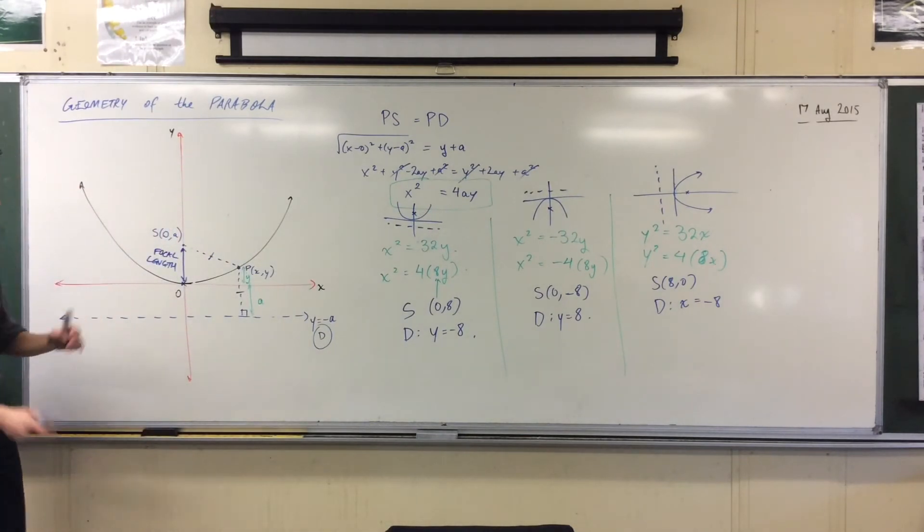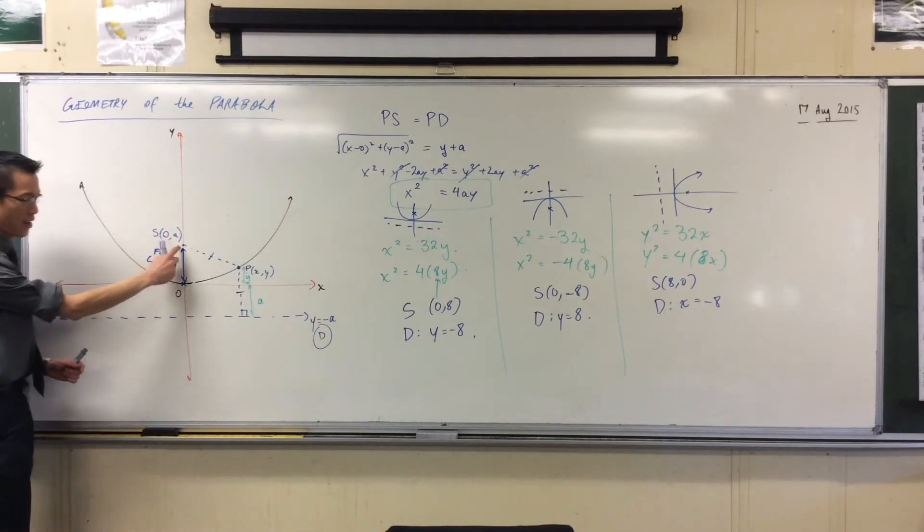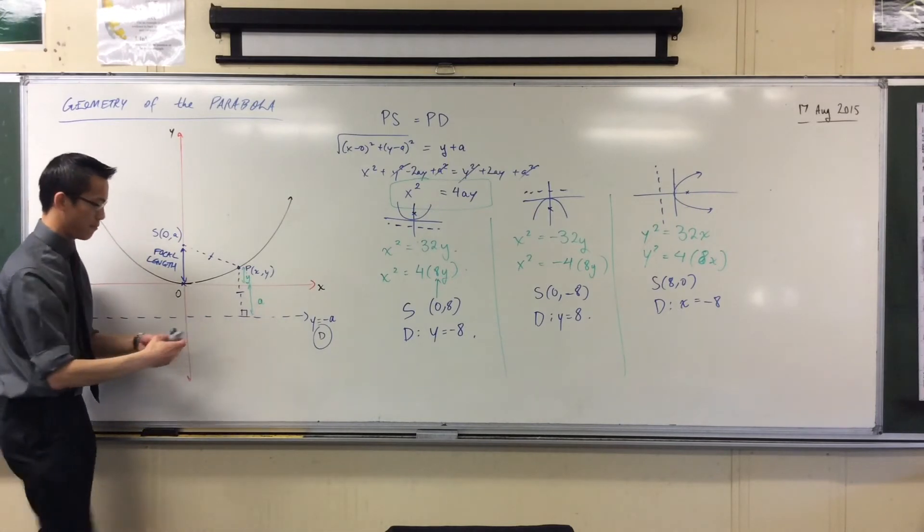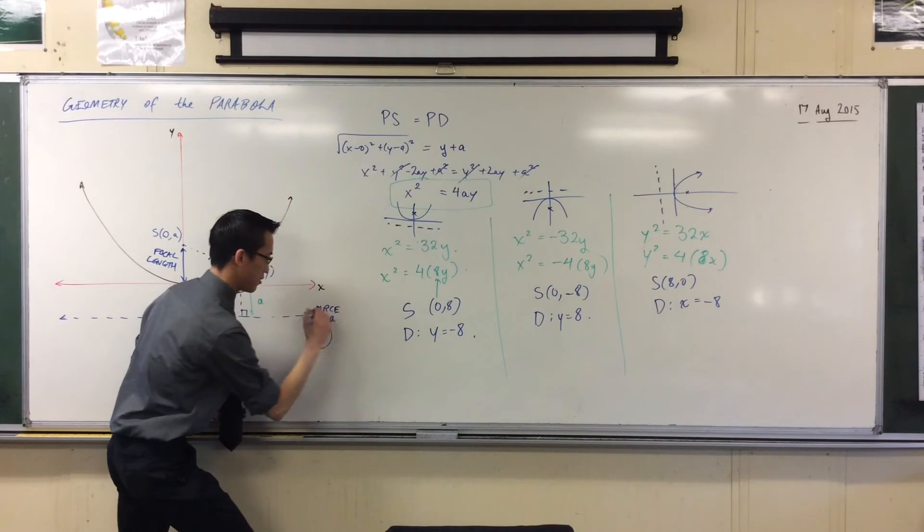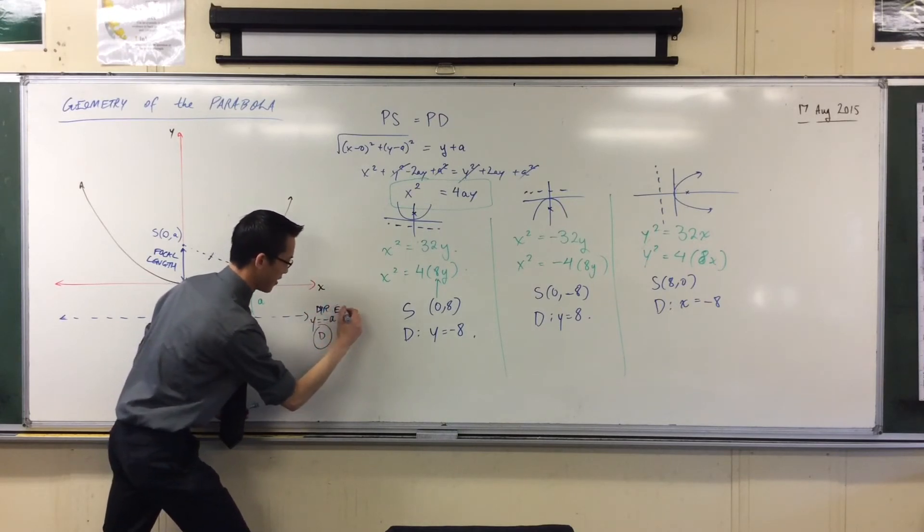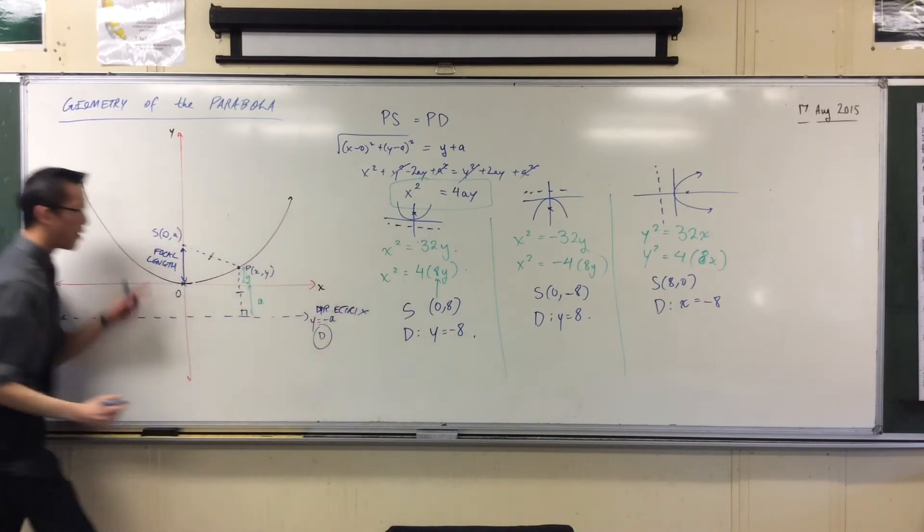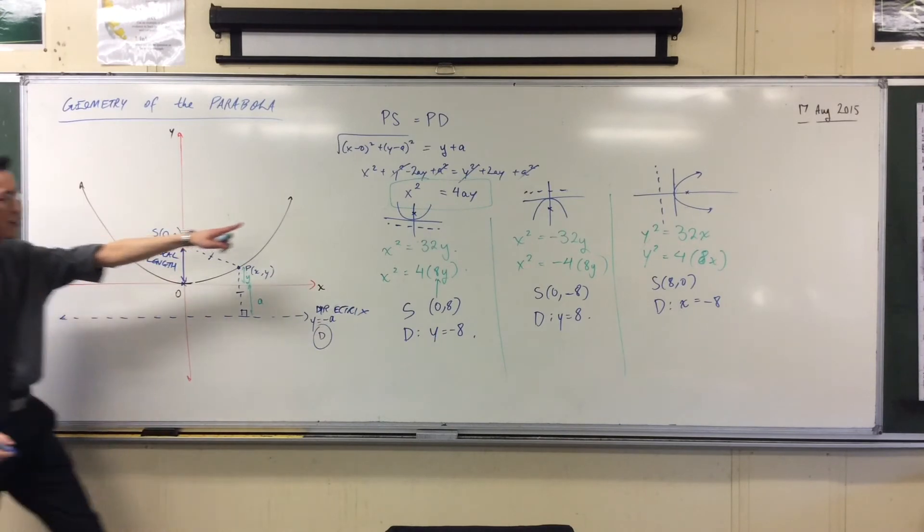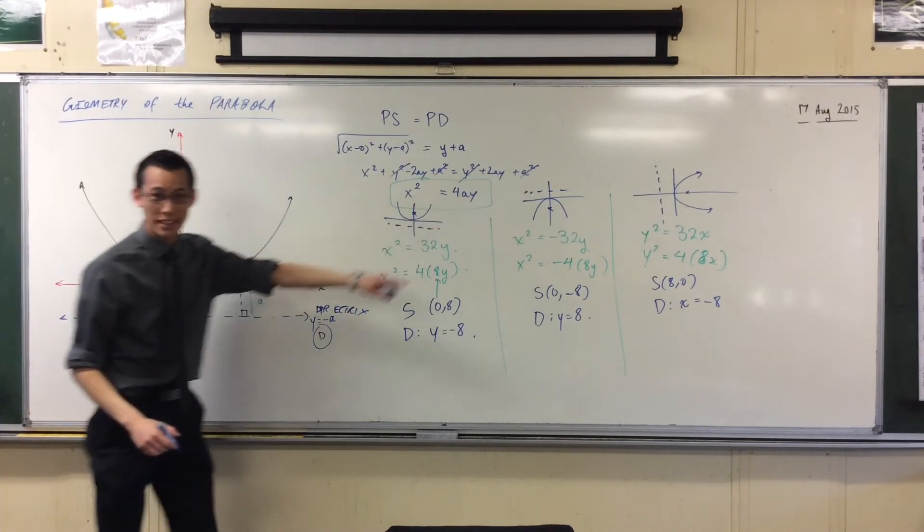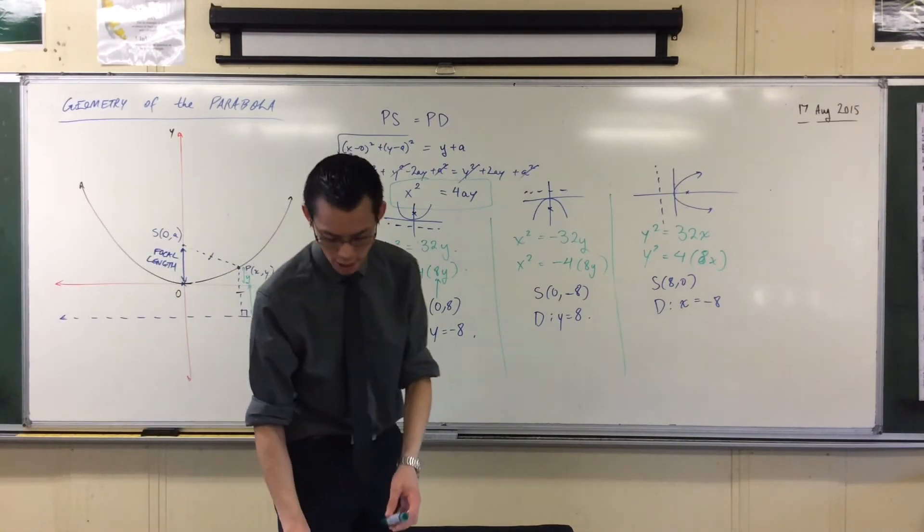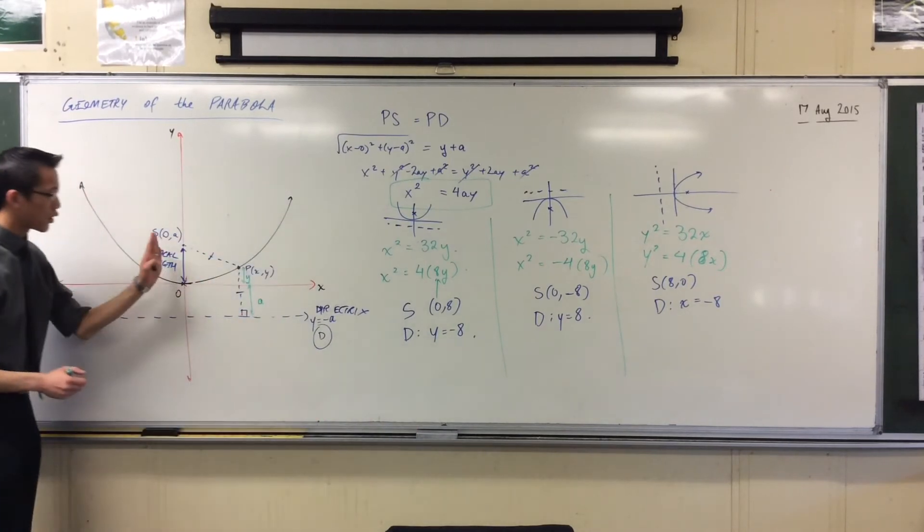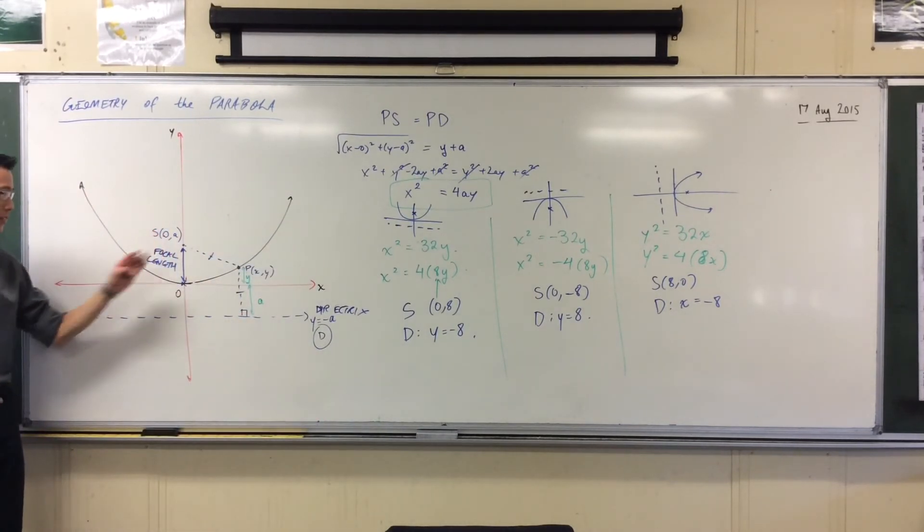All right, so we introduced the focus, then we had the directrix. I'll label that again. Directrix. If I can spell, do it far out, let's start again. There we go. Introduce the focal length once you know the correct form. I've been spelling it wrong. Directrix. There's one more line I want to put on here so you can go back to your labeled thing.